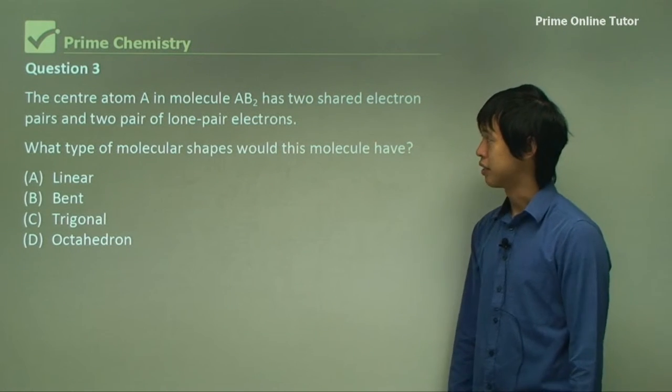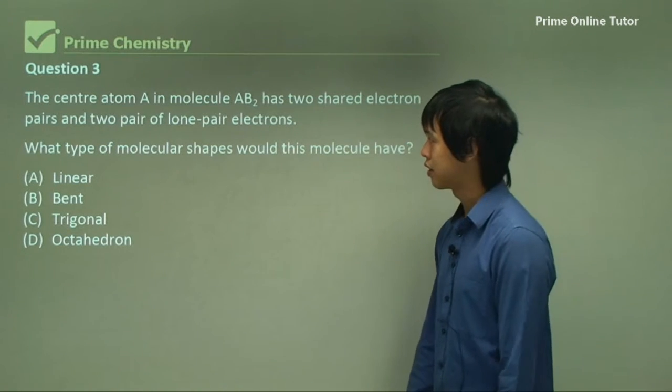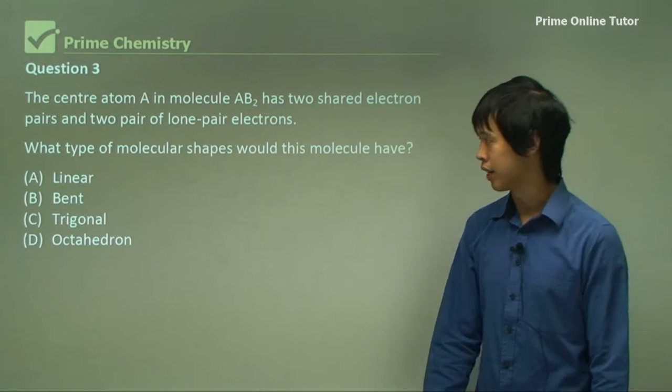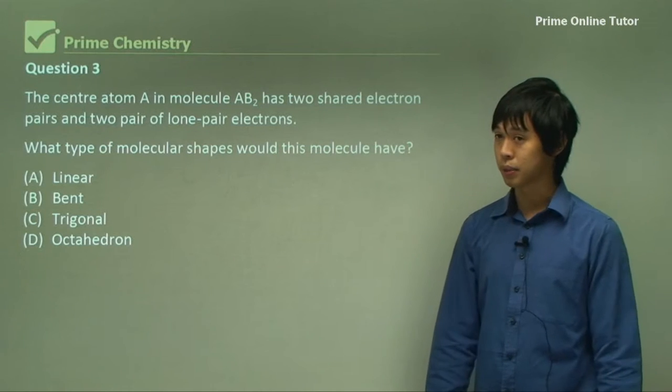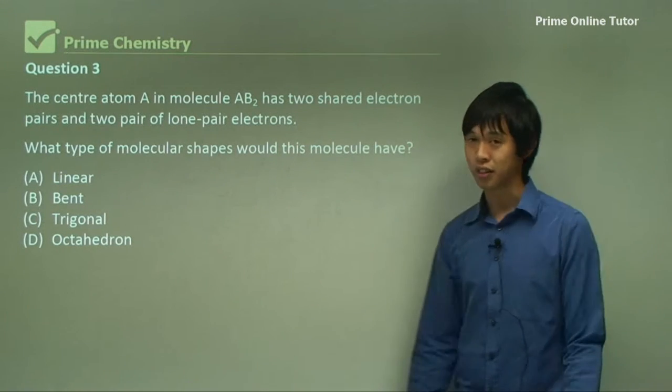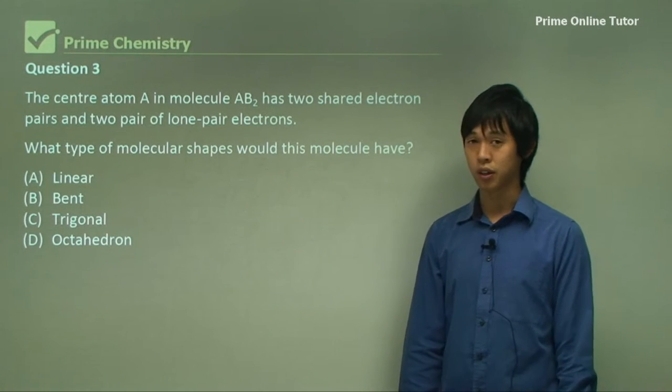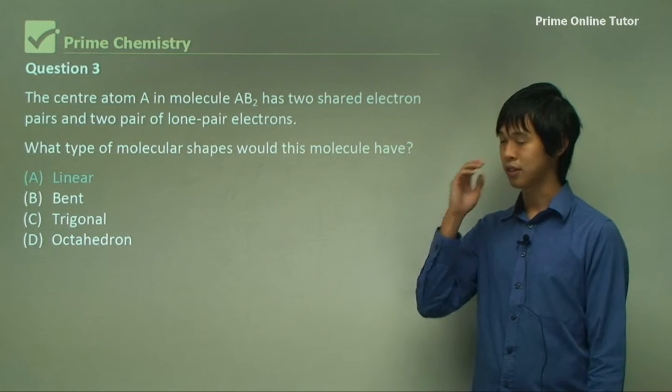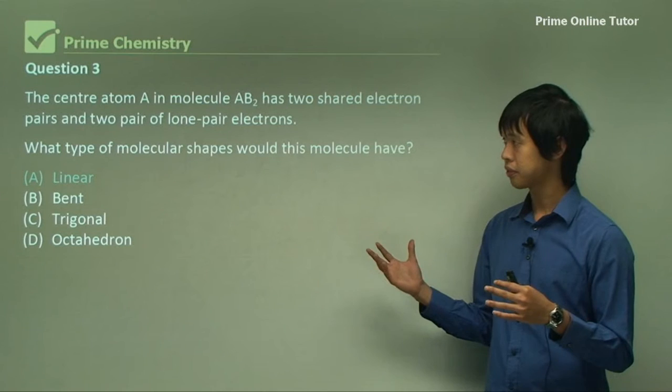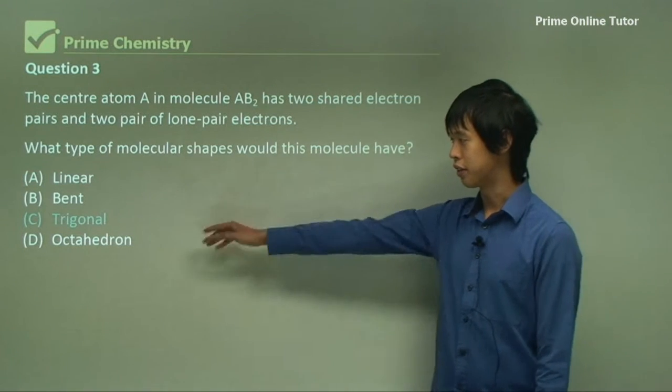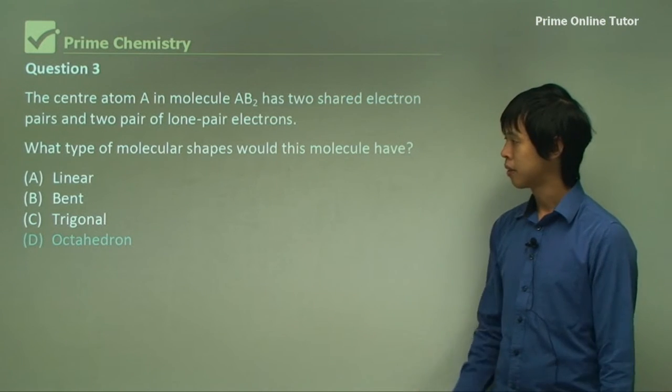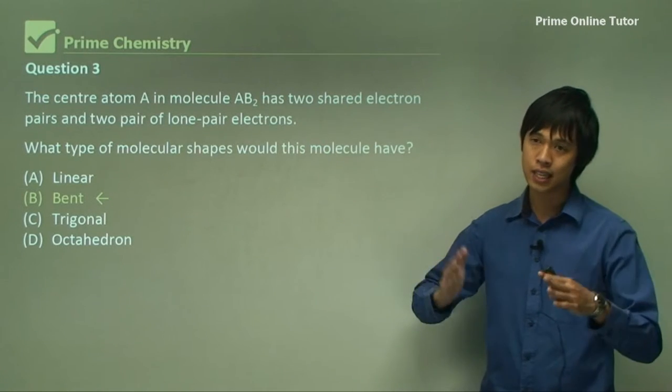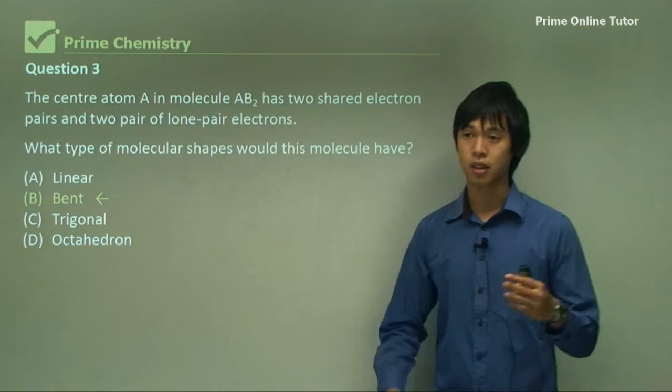Question three. The center atom A in a molecule AB2 has two shared electron pairs and two pairs of lone pair electrons. What type of molecular shape would this molecule have? Well, if we think about what this is saying, it's very similar to H2O. So it's very likely to be, could be something like H2O, but it could also be something like CO2. So there's a bit of confusion there, right? So let's have a look and see if we can go through each one and hopefully get some answers. So it's unlikely to be linear, because it's got two lone pairs. So the distribution of electrons is unlikely to be linear, because you're more likely to get a bent structure. It's definitely not trigonal or octahedral, because they're both three-dimensional shapes. So it's bent. Now remember that it's not linear, because the lone pairs exert more force than the bonded pairs. So they tend to push down a little bit harder than the bonded pairs.